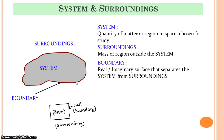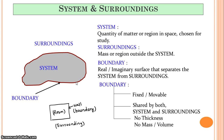What is a boundary? A boundary is a real or imaginary surface. If you take the example of a room, it is a real surface — the walls — that separates your system from the surrounding. Important points about boundaries: a boundary can be fixed or movable, and it is shared by both the system and the surrounding.